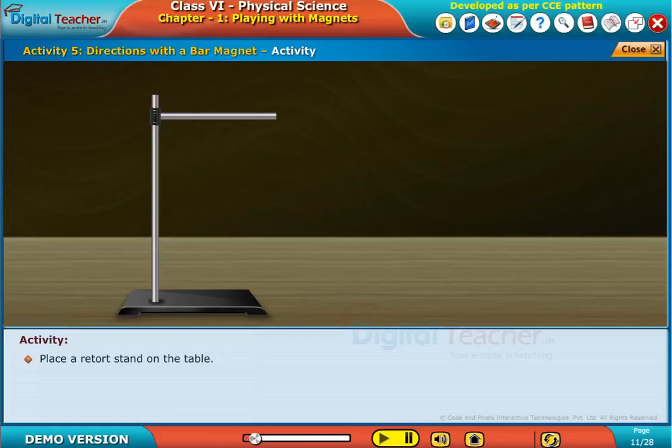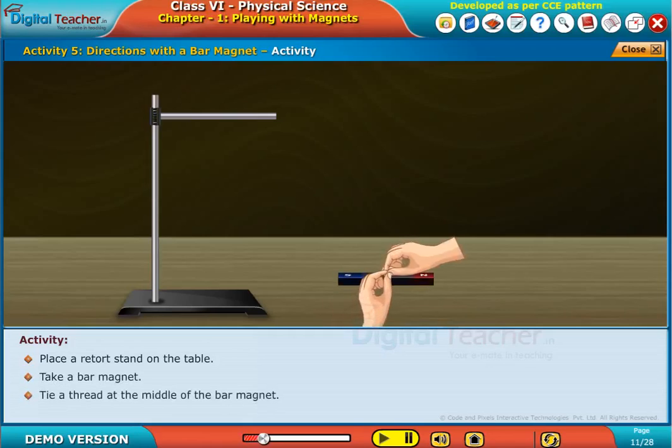Place a retort stand on a table. Take a bar magnet. Tie a thread at the middle of the bar magnet.